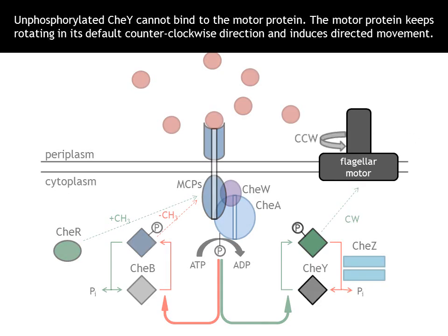Unphosphorylated CheY cannot bind to the motor protein. The motor protein keeps rotating in its default counterclockwise direction and induces directed movement.